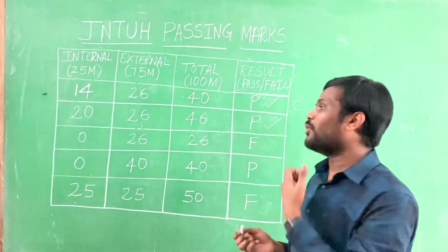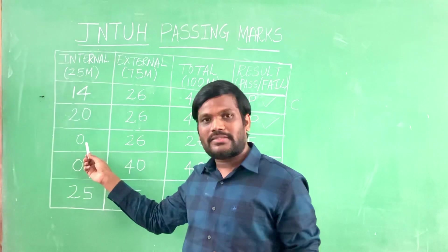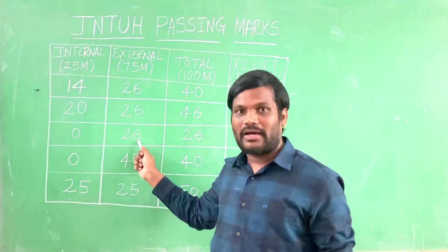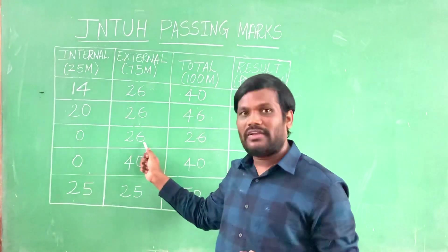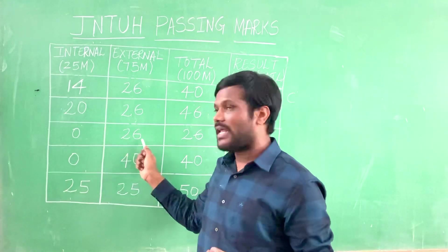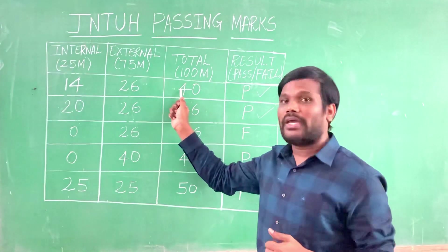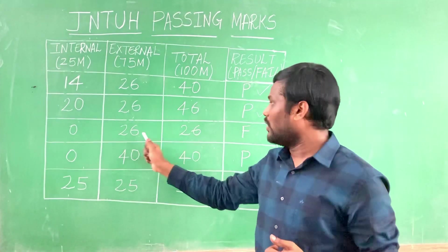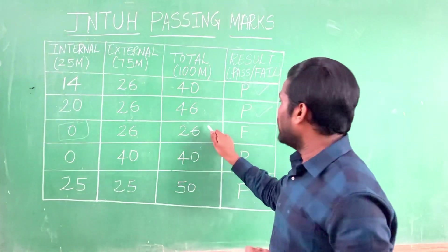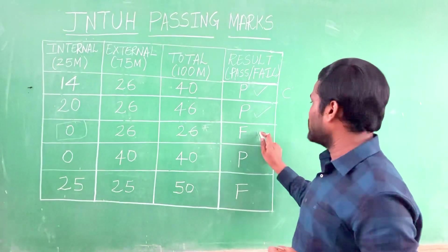Few students won't be taking up the internal exam — they will be absent or scoring 0 marks. Whereas, a student scored only 26 marks which is 35% of 75 marks. But when you sum up the internal evaluation as well as the external exam, you should get a minimum of 40 marks. Here it is only 26, because the student got 0 in internals. So it is failed — because you did not get 40 marks total, the course is failed.